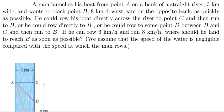A man launches his boat from point A on the bank of a straight river 3 kilometers wide and wants to reach point B, which is 8 kilometers downstream on the opposite bank, as quickly as possible. He could row his boat across the river to point C and then run to B, or he could row directly to B, or he could row to some point D between C and B and then run to B. If he can row 6 kilometers per hour and run 8 kilometers per hour, where should he land to reach B as soon as possible?